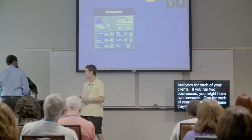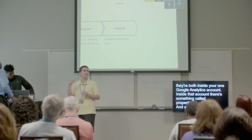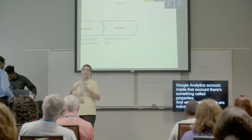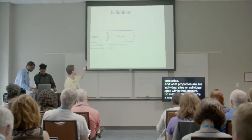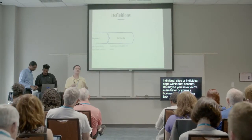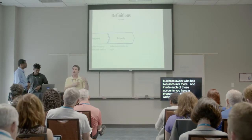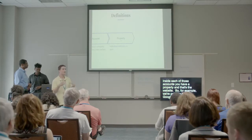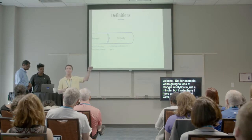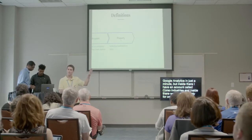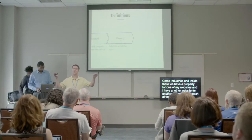Inside that account, there's something called properties. Properties are individual sites or individual apps within that account. So you might have two accounts — maybe for two different clients — and then each of those might have only a single property, which is a single website. For example, I have an account called Corso Industries, and inside there I have a property for one website and another property for a second website under that company.